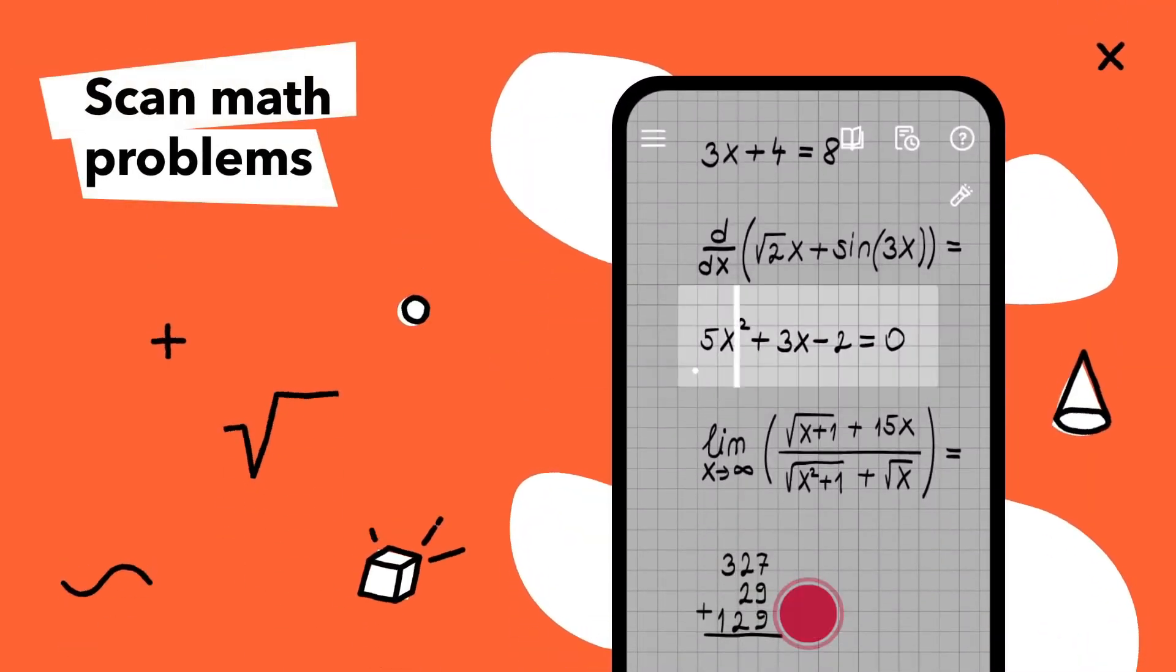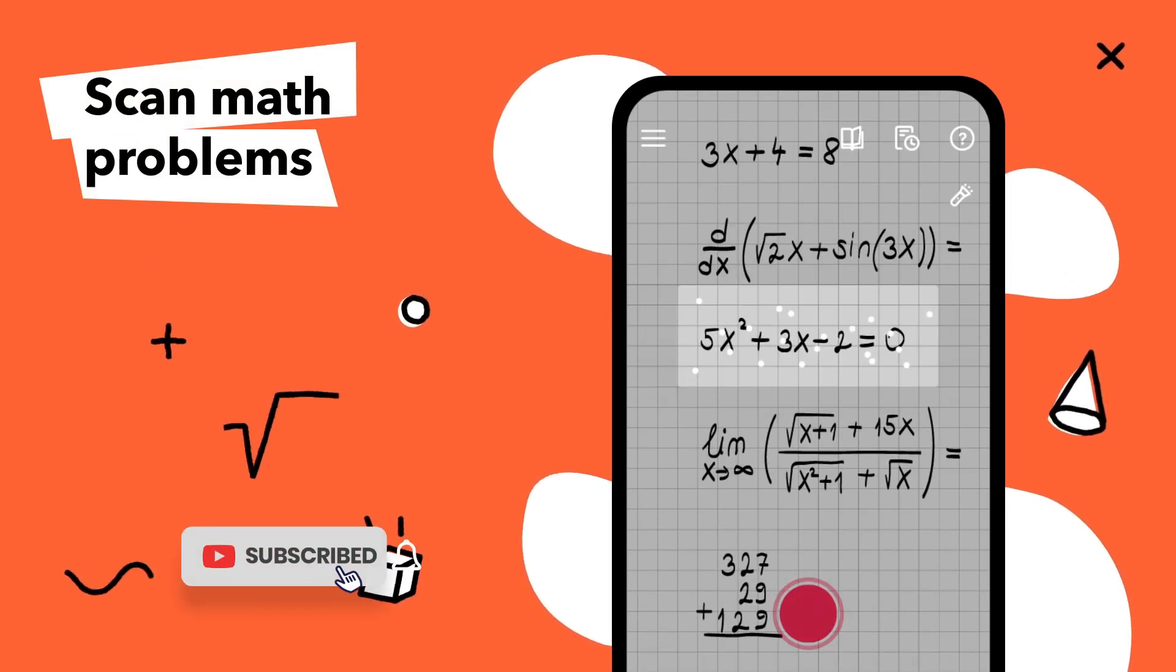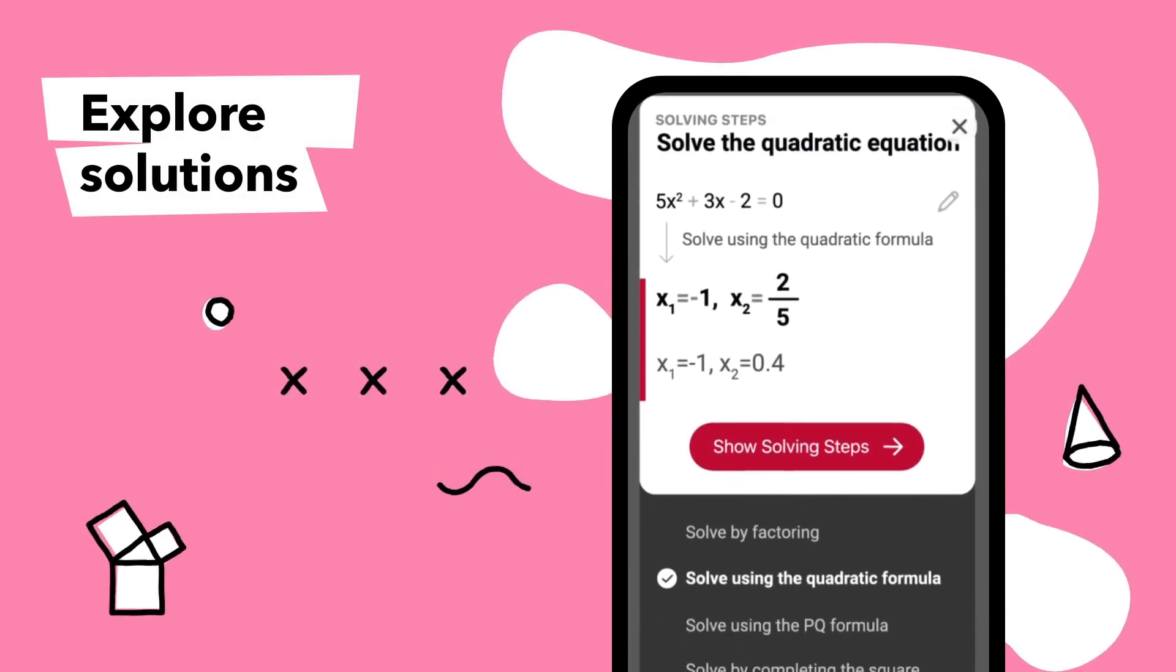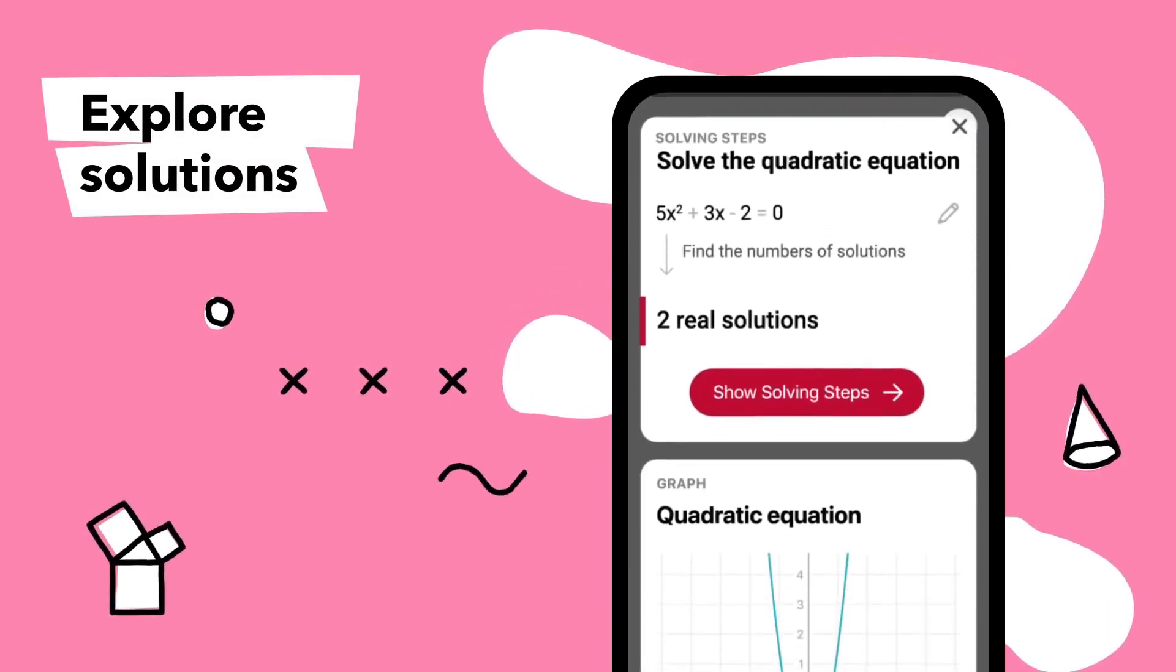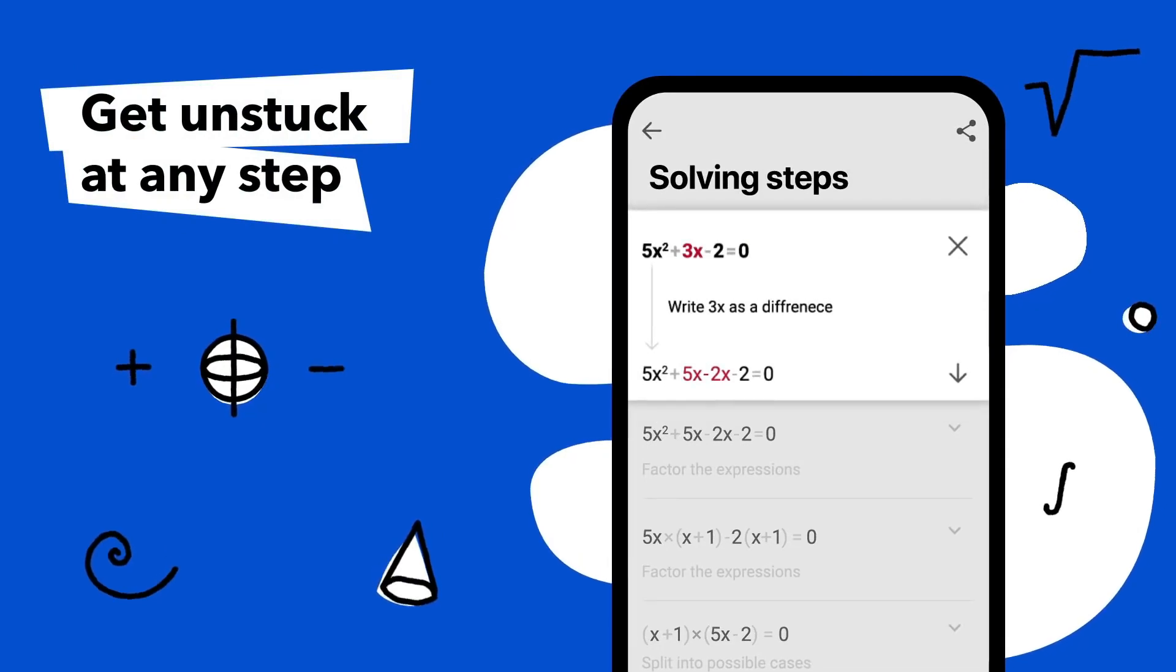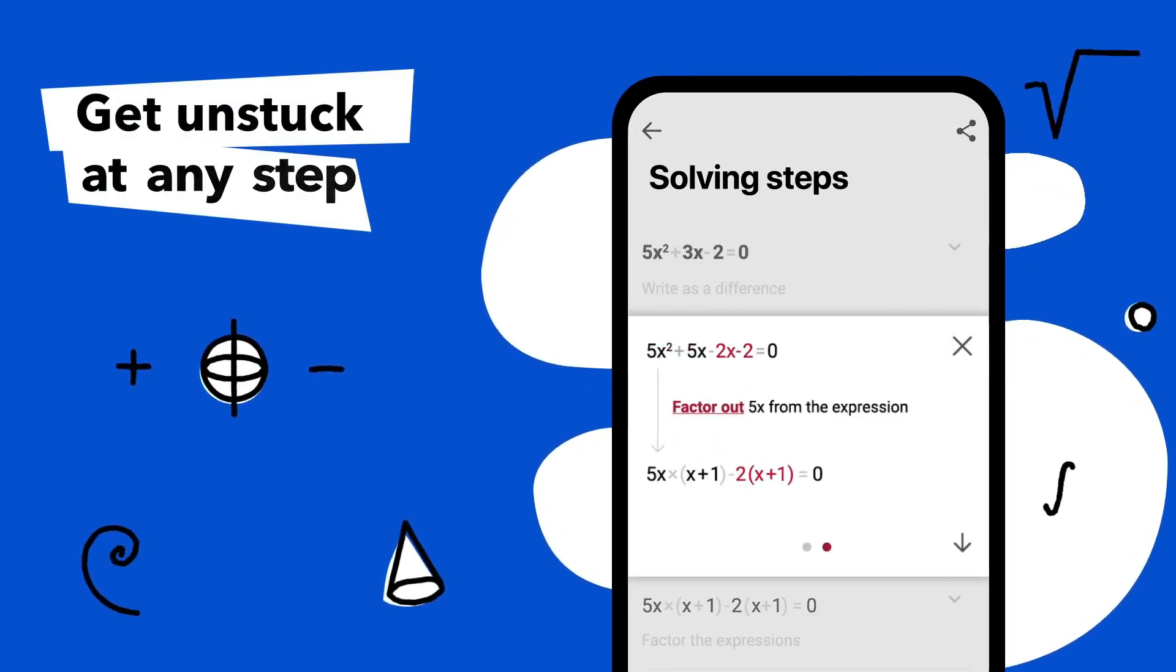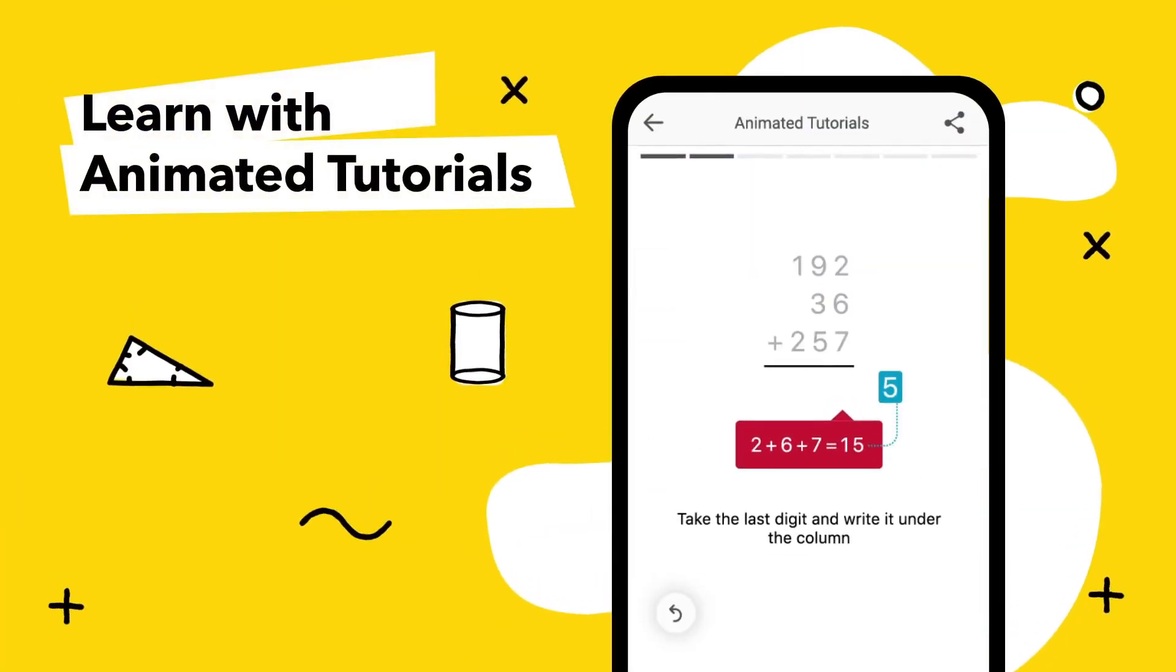Photomath is a unique app because you will get excellent features here. For example, you can solve any of your math problems only by clicking a picture. Feeling shocked? But it's true. You have to open the app and click the image of the question, and the app will solve it.